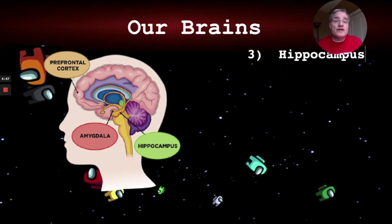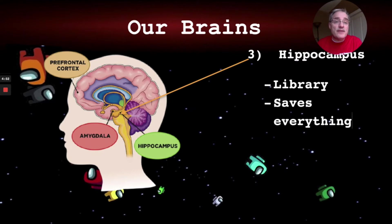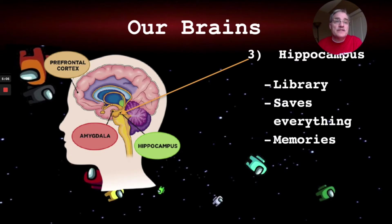The hippocampus is the library — it saves everything: all our memories, all our habits. It's what the prefrontal cortex goes to in order to get information about how to solve a problem. For example, if you've stored Kelso's choices in your hippocampus, it would know those nine choices to solve a problem.